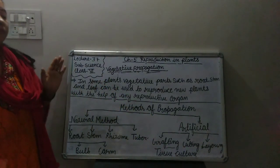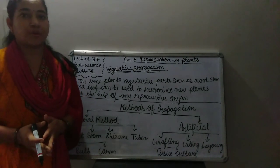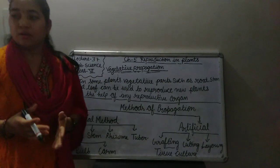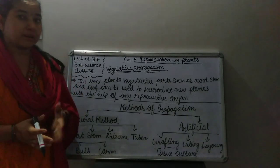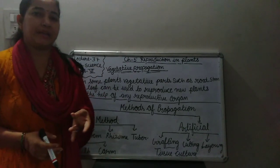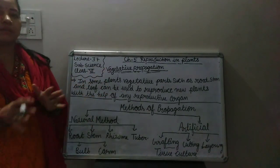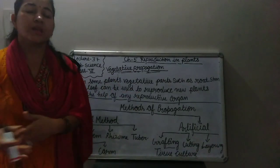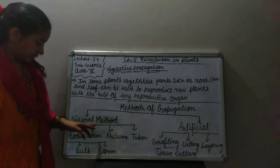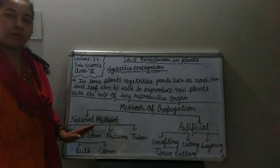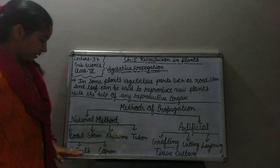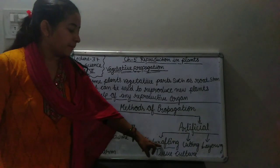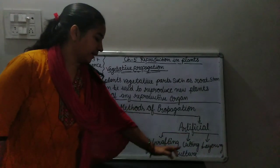To summarize: vegetative reproduction or vegetative propagation is when some plants reproduce their species with the help of vegetative organs like roots, stem, and leaves. There are two types of methods — natural methods, which include roots, stem, rhizome, tuber, bulb, and corm, and artificial methods, which include grafting, cutting, layering, and tissue culture.